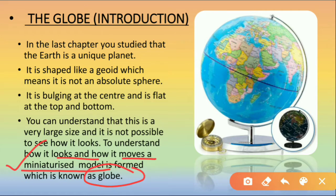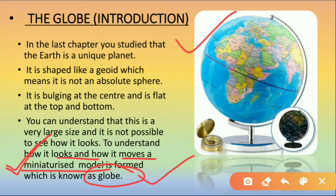What do you mean by miniaturized? A miniaturized model means a very small model. In real, the earth is very large in size but we cannot see it. So a small model has been prepared which looks the same as the earth, and that model is known as the globe. You can see the picture of the globe right here — this is a miniature model of the earth.